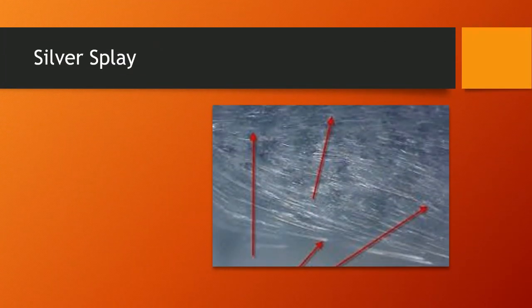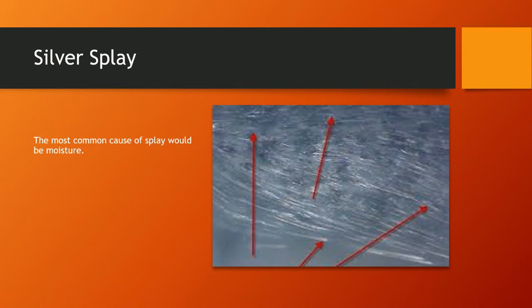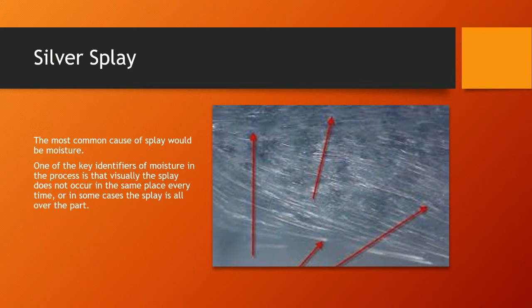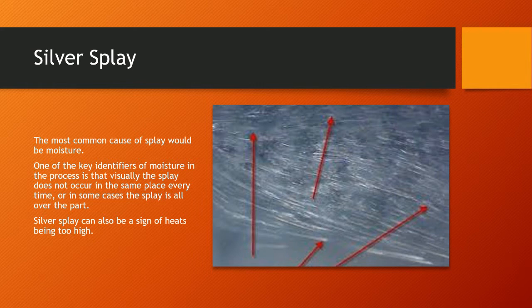This is one example of a visual aid where we can look at the part and identify the type of splay. It's generally called silver splay or fireworks splay, and the most common cause is moisture. A key identifier of moisture-related splay is that it does not occur in the same place every time — or as in this case, the splay is all over the part. Silver splay can also be a sign of heats being too high; if you're overheating the material, the shear becomes too high and you end up with this appearance.